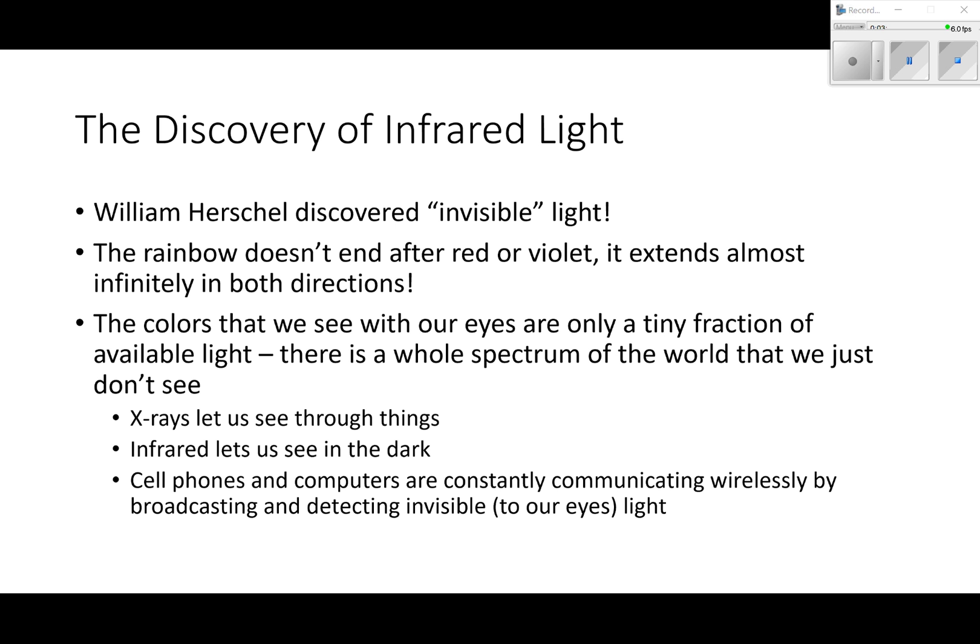William Herschel discovered invisible light. It was just amazing. He found that the one that wasn't sitting in the rainbow, the one that was in the darkness, is the one that got hottest. What he discovered was the rainbow doesn't end after red or violet - it goes almost infinitely in both directions. There's invisible light. The rainbow goes past red, goes past violet, but we can't see those colors with our eyes. The colors that we see with our eyes are only a tiny fraction of the colors available. There's a whole spectrum of the world that we just don't see.